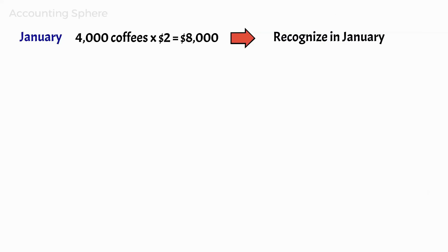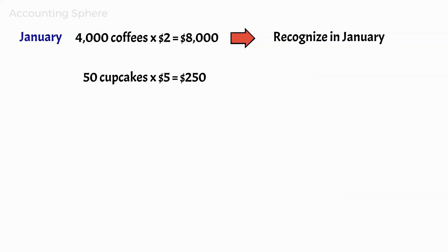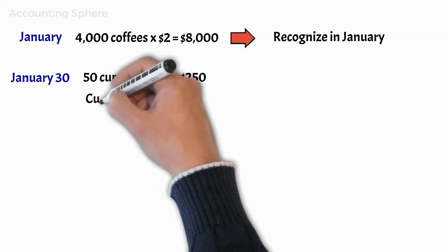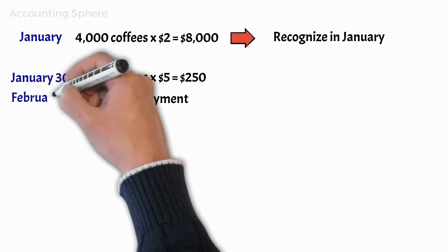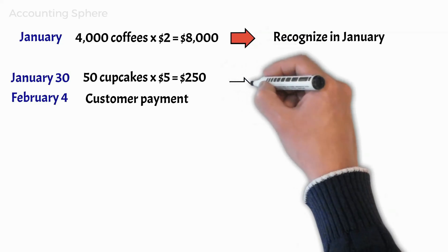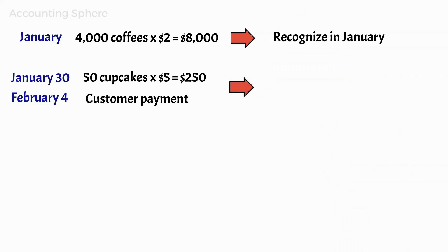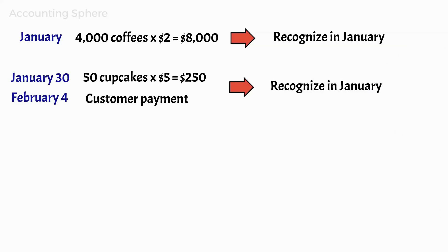Let's imagine now the following event. Michael also sells cupcakes in his coffee business, and he receives on January 27 an order to deliver 50 cupcakes at $5 each for January 30. He charges his clients fees of $250, and his conditions require that the client pays by February 4. As the delivery job was completed in January, even though his clients will not pay Coffee & Go Sweet until February 4, the accrual basis approach of accounting requires the $250 to be recognized as January revenues.